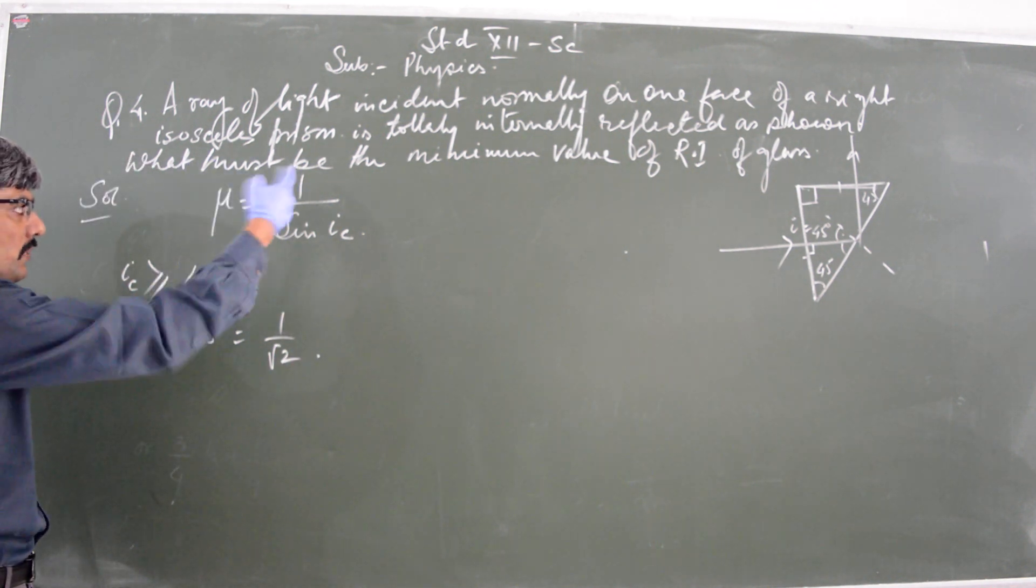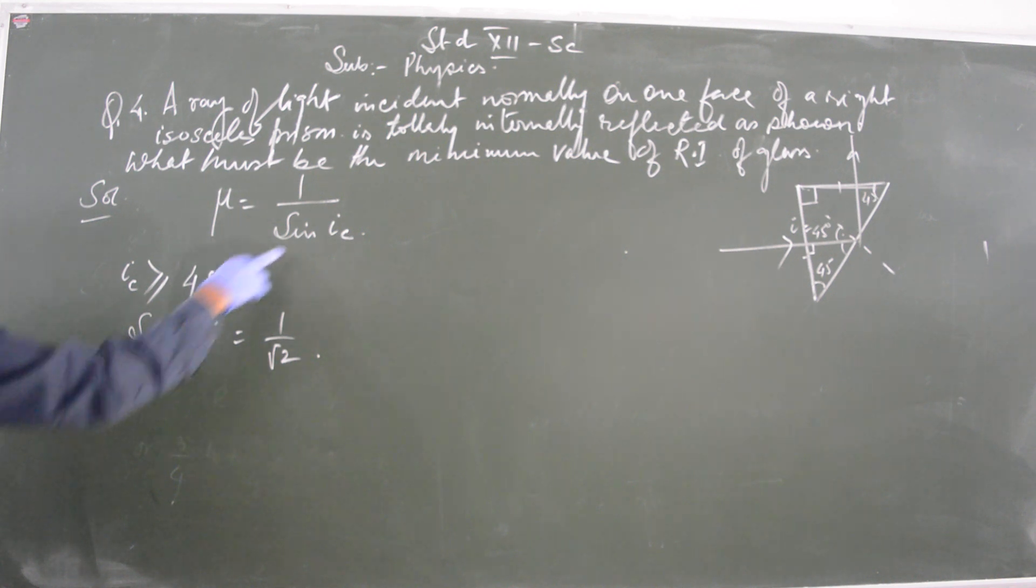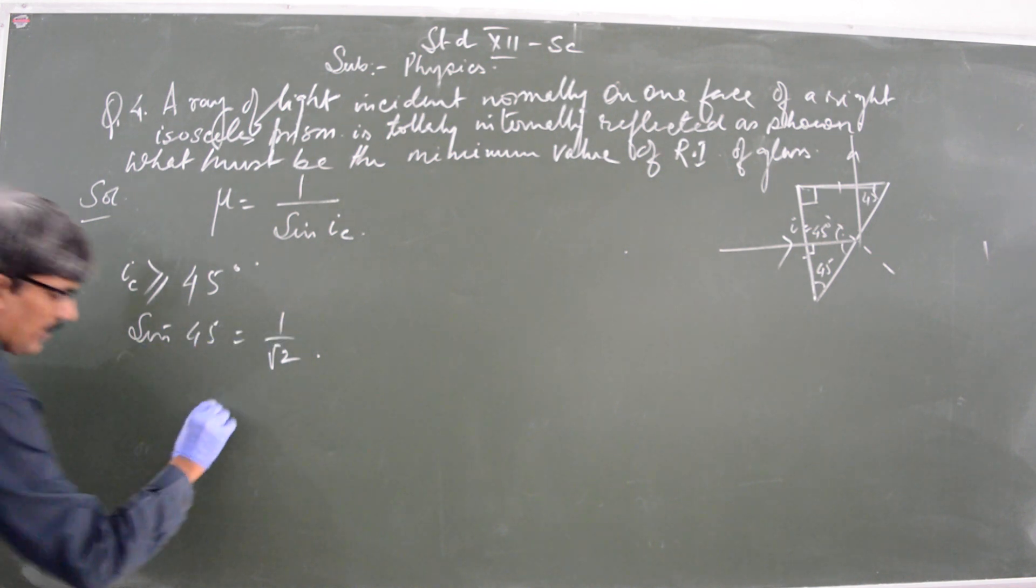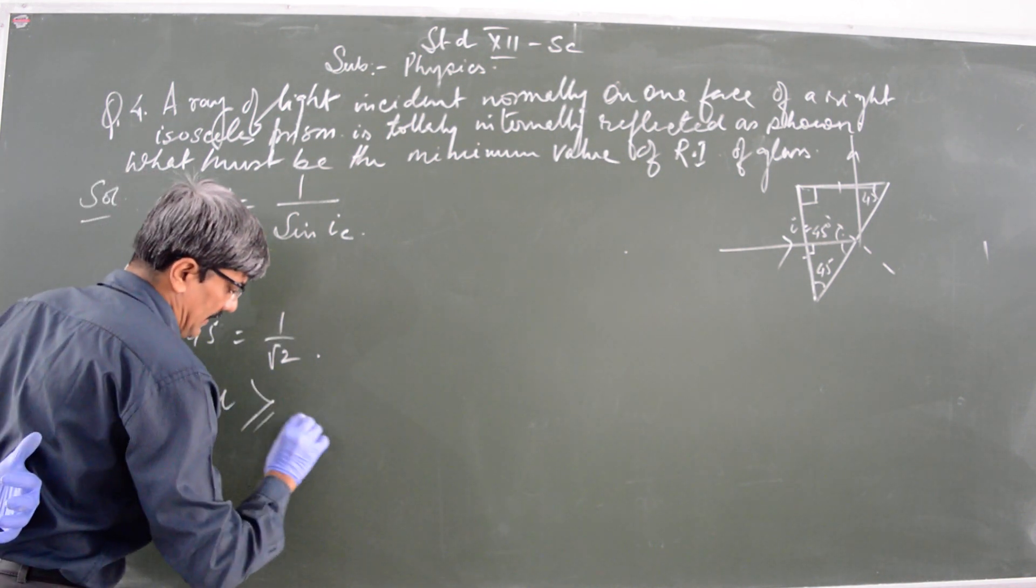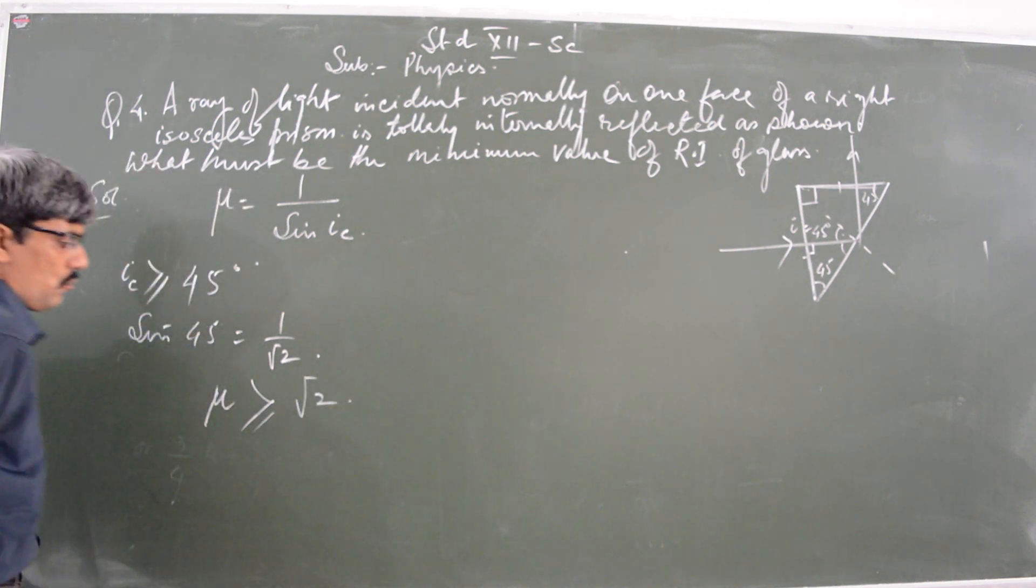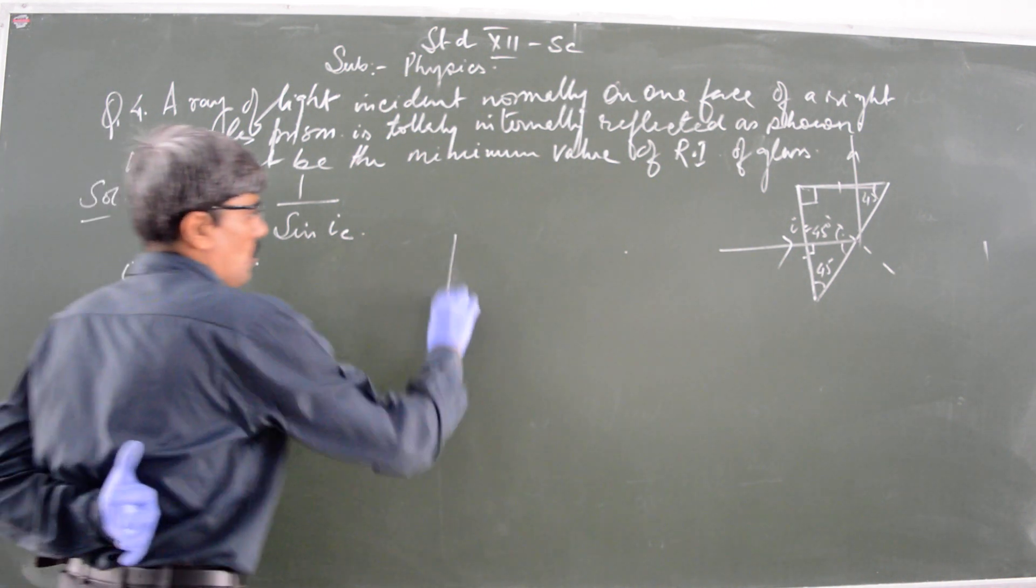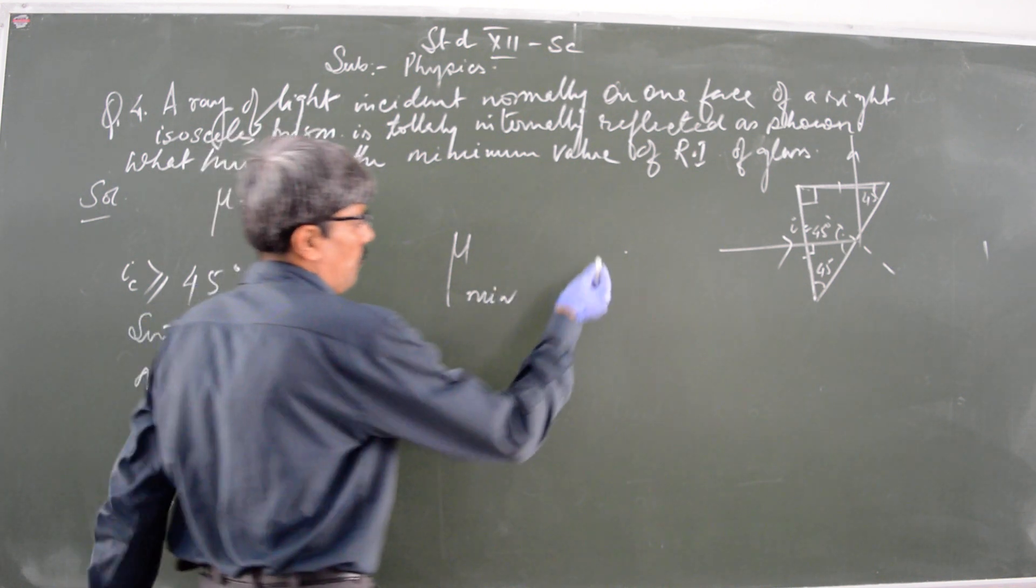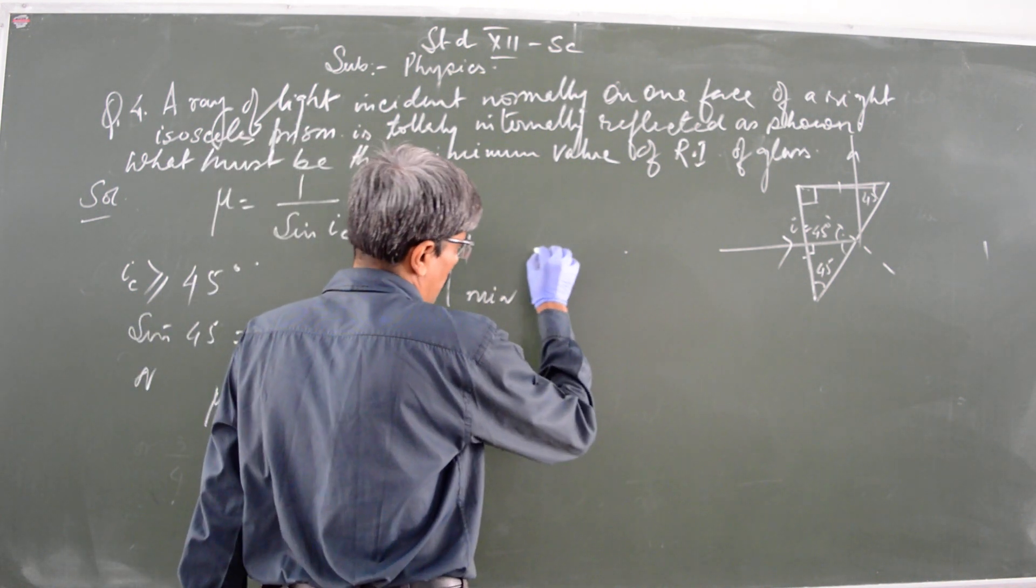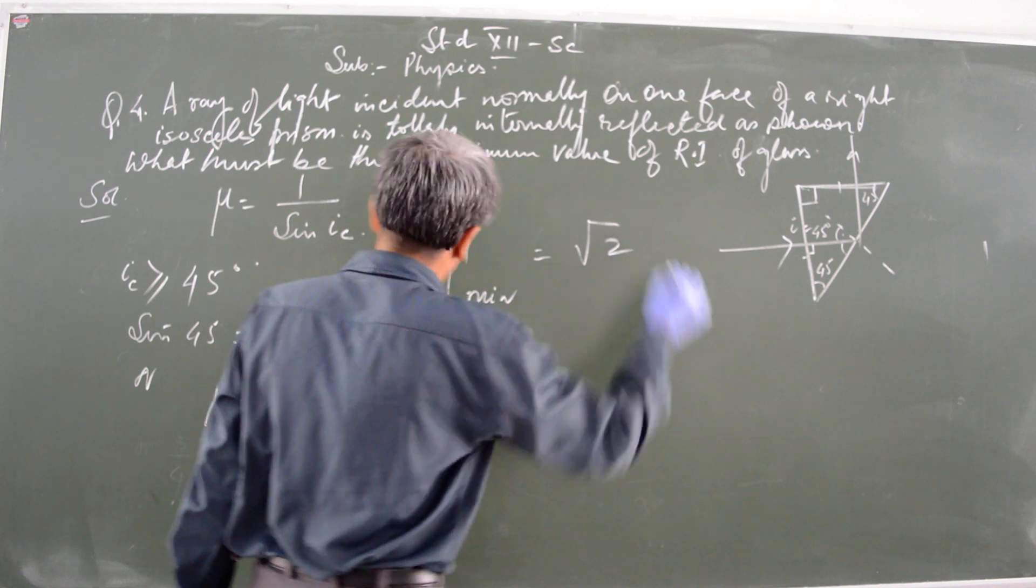So if you put this in this expression, sine of 45 is 1 by root 2. From these two expressions, it is very clear that the refractive index must be greater than root 2, or the minimum value of this refractive index is equal to root 2.